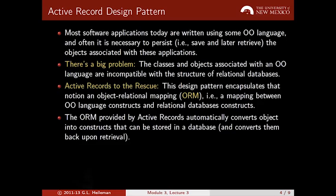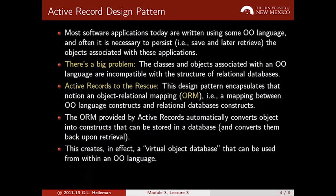It automatically converts between the various objects and classes in an object-oriented language and stores them in the tables and columns of a relational database. This creates what's in effect a virtual object store that you can use as part of your back-end database.